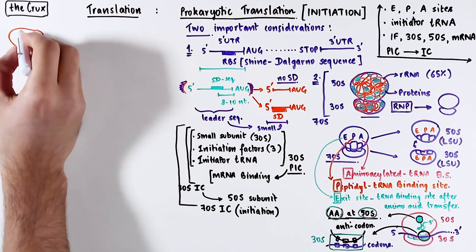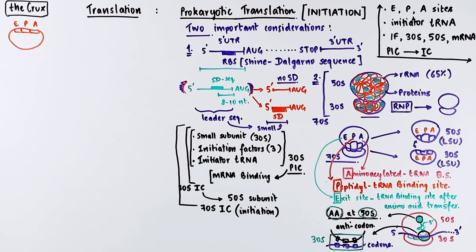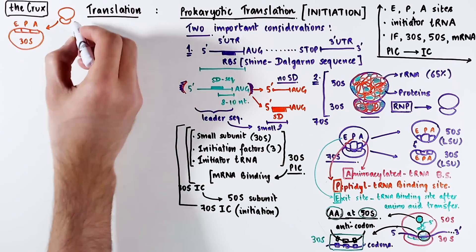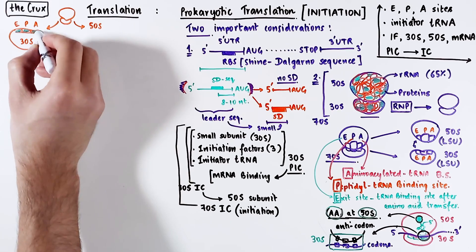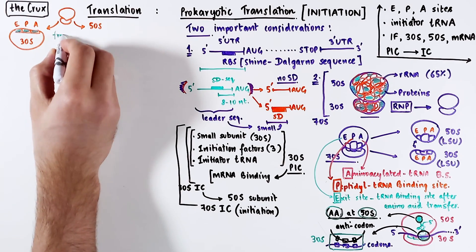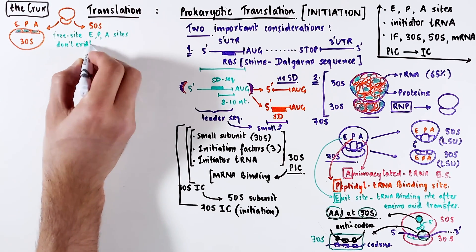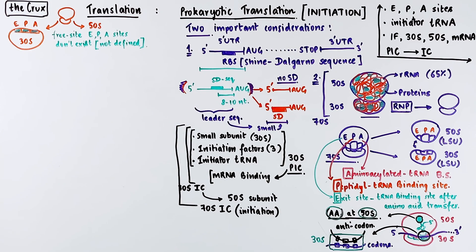The process starts with the free 30S subunit of the ribosome, which at this moment does not have any defined E, P, and A sites. The free small subunit is recycled from ribosomes that are terminated from the translation process, which frees up the small and the large subunit. The E, P, and A sites do not yet exist — they are not defined yet. Actually, the process of initiation helps define the E, P, and A sites.